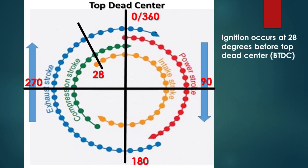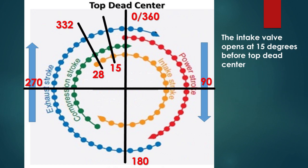Using the valve timing chart, we will make a reference line indicating 28 degrees before top dead center. Note that 28 degrees is also 332 degrees of the full 360-degree travel. The second piece of the word problem is the intake valve opens at 15 degrees before top dead center. 15 degrees is also 345 degrees of the 360-degree travel range, and in direct relation to the word problem, it is 165 degrees after bottom dead center.